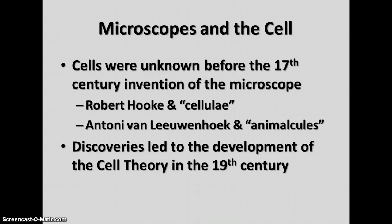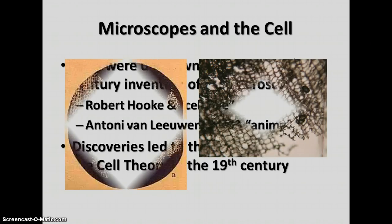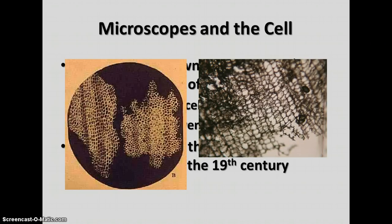Some of the earliest scientists to discover things about cells were Robert Hooke and Antony van Leeuwenhoek. Robert Hooke was the first one credited with the name 'cell' because when he looked at a thin slice of cork cells under his microscope, he saw what he thought looked like lots of tiny little rooms or cells, like monks use in a monastery. He shows these are empty cells — just the cell walls are left with the cork.